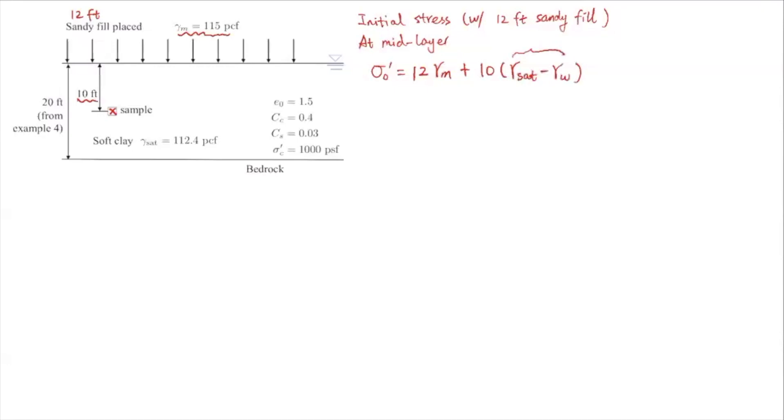This is the buoyant unit weight, γ_b or γ'. And if you're substituting these unit weights, so 12 times 115 plus 10 times (112.4 minus 62.4). So the initial effective stress is 1880 PSF. So that's the stress before we remove that sandy fill.